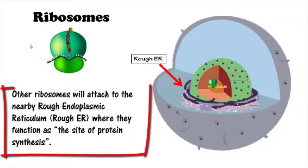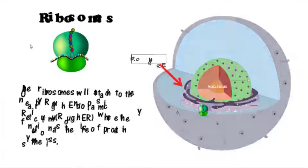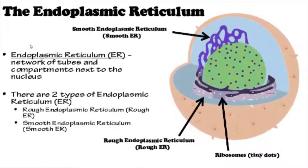Ribosomes attach to the rough endoplasmic reticulum, or rough ER, where they function as the sites of protein synthesis. Free ribosomes make soluble proteins that function within the cytosol. Ribosomes attached to the rough ER make proteins that will become part of the cell membrane or that will be exported out of the cell. The endoplasmic reticulum is a network of tubes and compartments next to the nucleus.